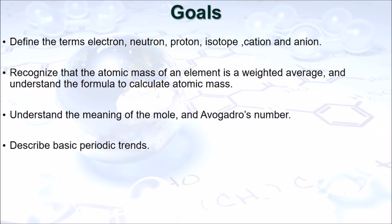We have now covered the beginning concepts of an atom and atomic theory. You should be able to define the terms electron, neutron, proton, isotope, cation, and anion. Recognize that the atomic mass of an element is a weighted average, and understand the formula to calculate atomic mass. You should now understand the meaning of the mole and Avogadro's number, and be able to describe basic periodic trends.